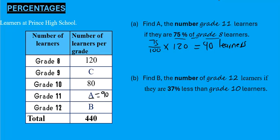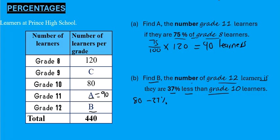Moving to B. We want to find B, the number of grade 12 learners, if they are 37% less than grade 10. Grade 12 is 37% less than grade 10. A common mistake is to take 80, which is the grade 10 learners, and just minus the 37% — but that is wrong because you can't take a number and minus a percentage.